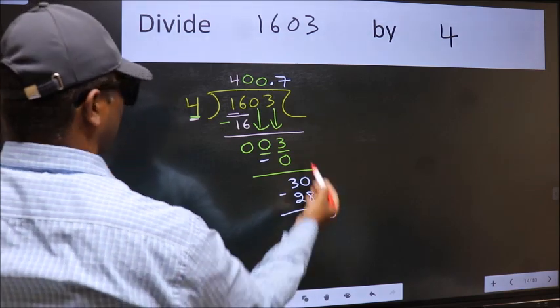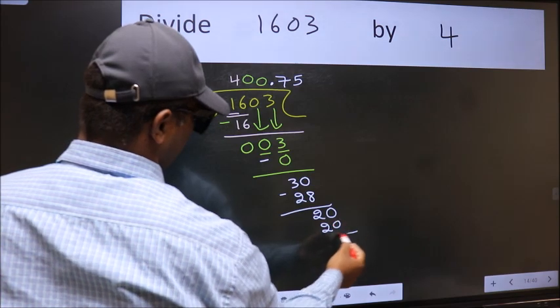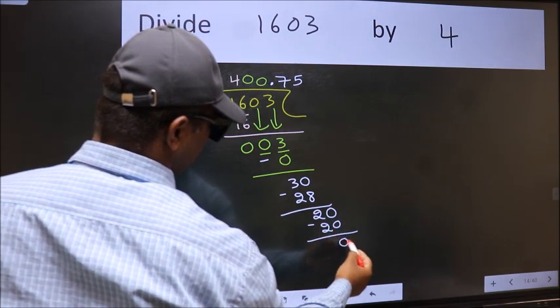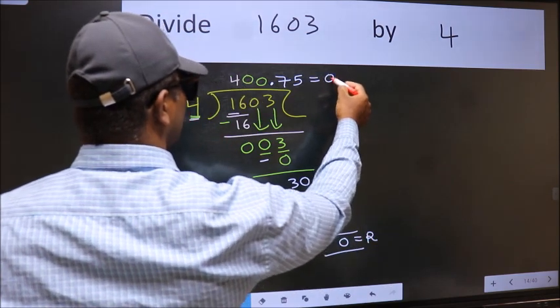When do we get 20 in 4 table? 4 5s 20. Now, we should subtract. We get 0. This is our remainder. And this is our quotient.